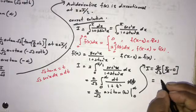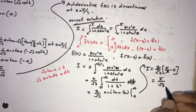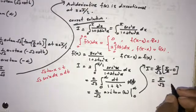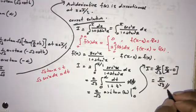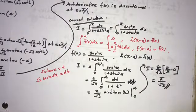Plugging in the limits: arctan(infinity) equals π/2 and arctan(0) equals 0. The 2 and the 2 in the denominator cancel, giving I equals π over square root of 3. This is the answer. If you like this video, please subscribe to this channel. Thank you for watching.